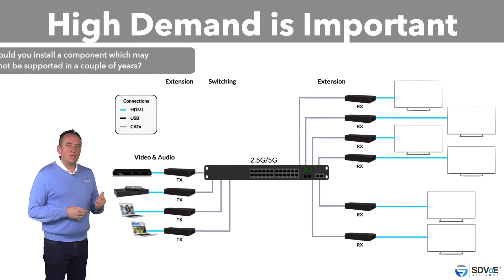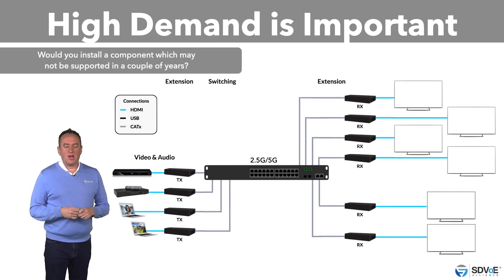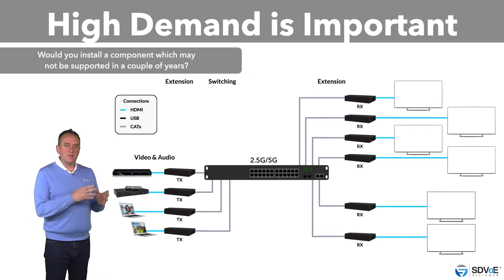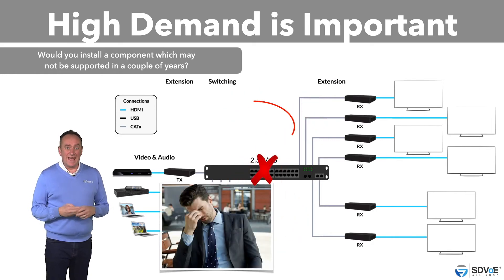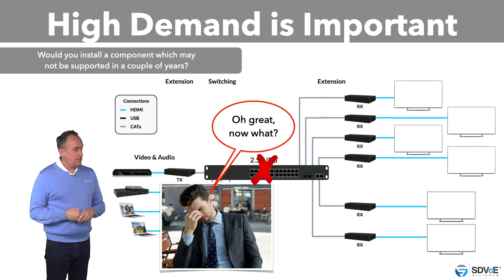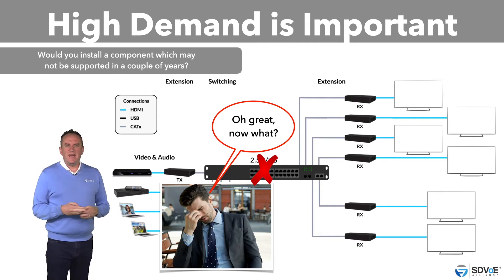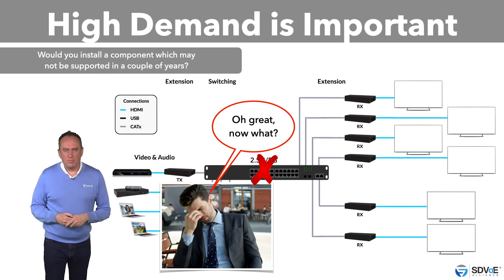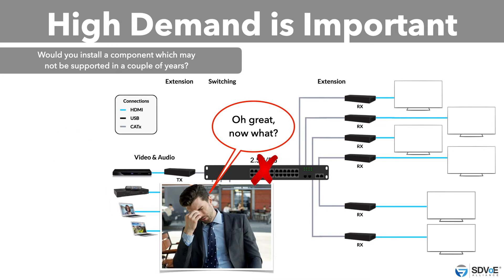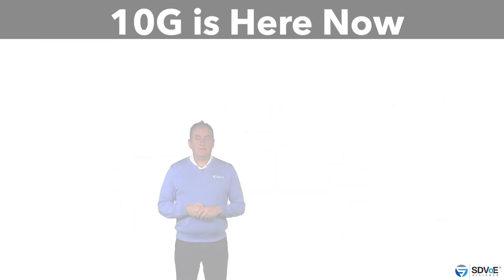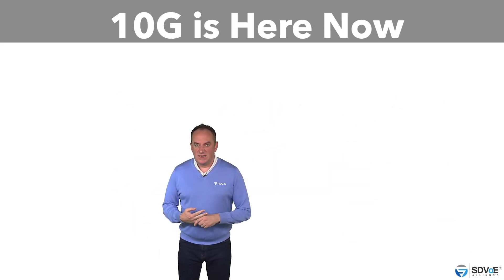Seriously, would you install a 2.5 gig network on a client project if you thought that within the next couple of years the manufacturers stopped producing and supporting that equipment? Think about the cost of having to replace that redundant equipment with new stuff. Then consider whether your client would be happy to go down to 1 gig in order to keep things working properly. Sobering thought, isn't it?